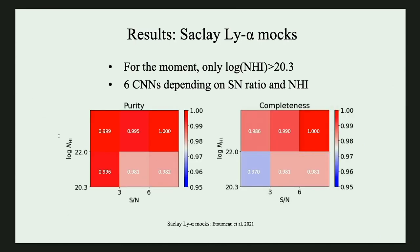Here are the results of our current DLA classifications on the second line of our mocks. We are working on DLAs with column density larger than 10^20.3. You can see that for these six data samples, depending on signal-to-noise ratio and column densities, we are achieving very good performance for all of them. For purity and completeness, they are all above 97%. This means we can already establish a very good DLA catalog, and our next step is to improve our ongoing Bayesian CNN structure to do the redshift and column density estimations.